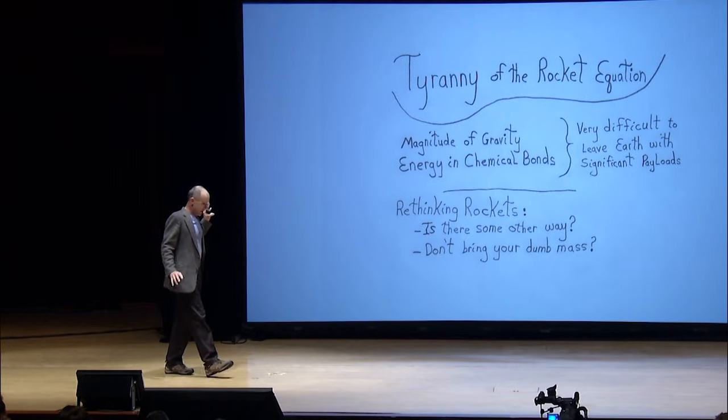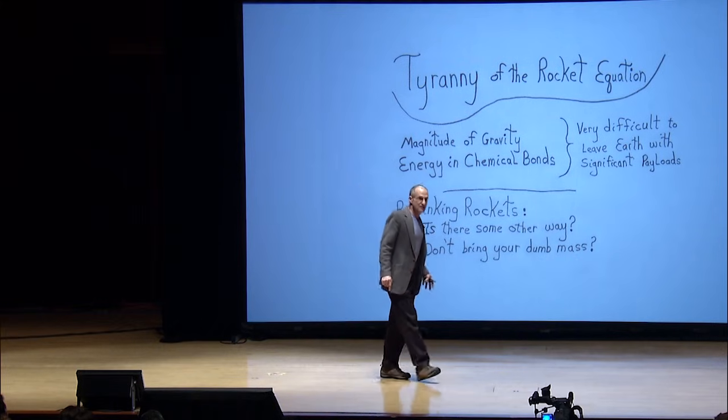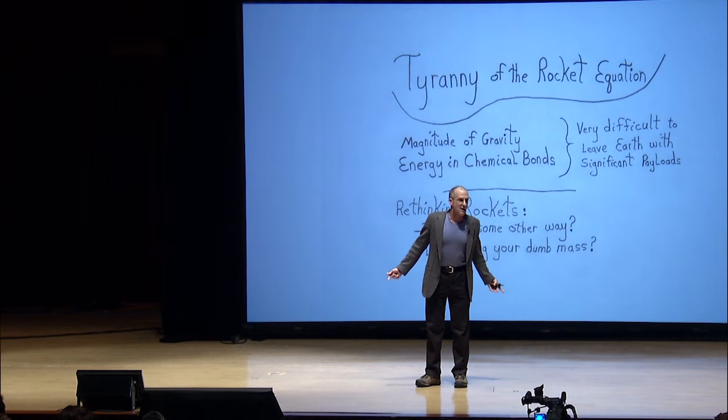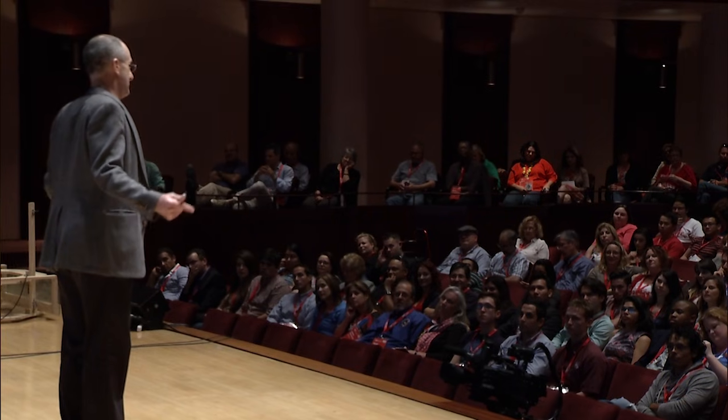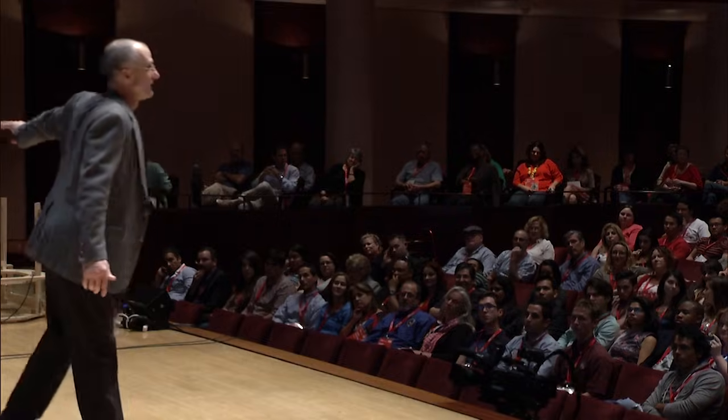This brings me to my final point. The Tyranny of the Rocket Equation involves the magnitude of gravity and the energy in chemical bonds, which hold this tyrannical grip on our ability to even make rockets. It is very difficult to leave Earth, particularly with significant payload. If Earth's gravity were slightly larger, we couldn't even get off the planet using rockets. The question I'd like to plant in everyone's minds is: is there some other way to get off Earth without using a rocket — and thereby break the tyranny of the rocket equation? Or, if we have to use rockets, could we minimize the tyranny simply by not bringing our dumb mass?